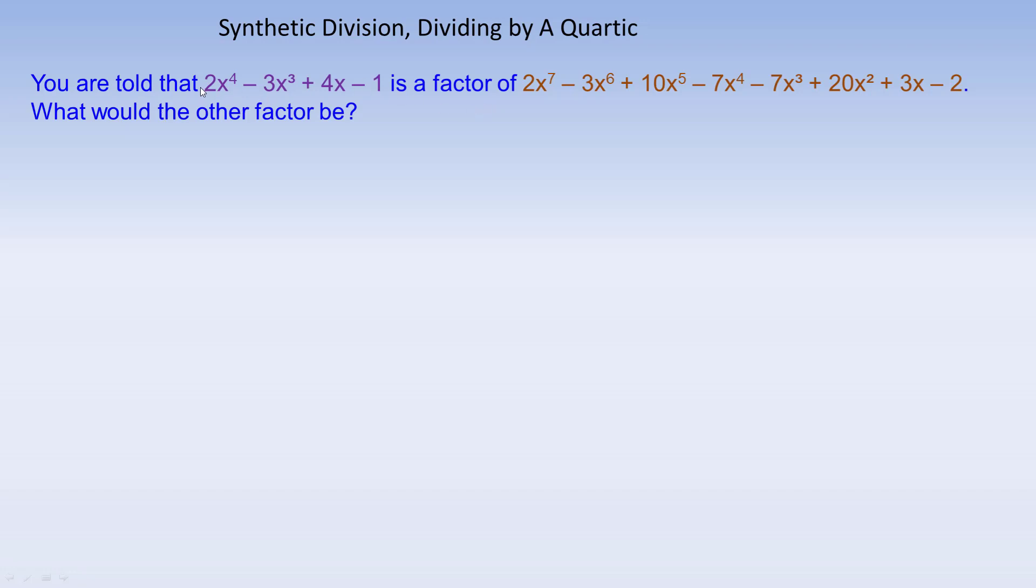So let's say that you were told that this quartic expression is a factor of this 7th degree polynomial. So you're asked, what would the other factor be? So we're looking for some other factor that if we multiply it by this, we would end up with this expression here.